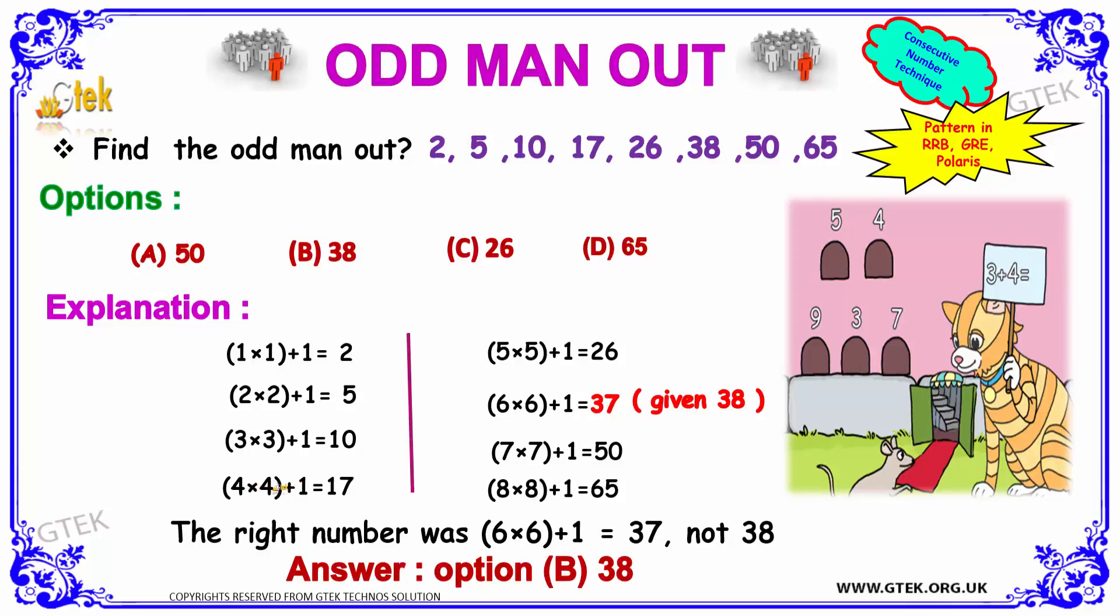Here, 4 into 4 plus 1. You are able to see 1, 4, 9, 16, 25. Good. So, kind of square plus 1.